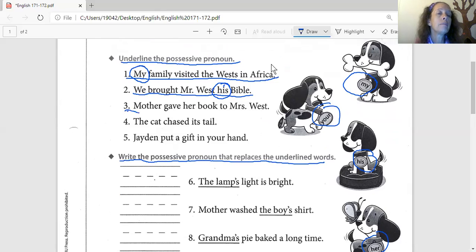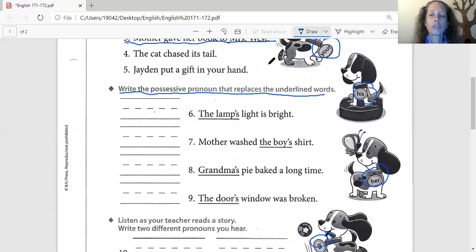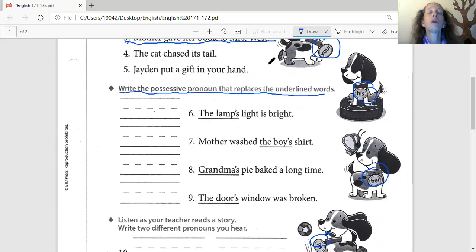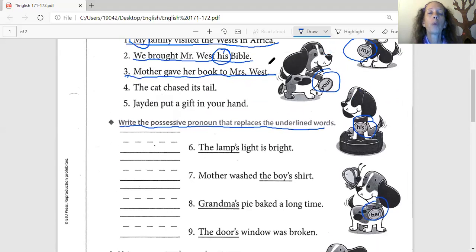Three. Rylan, are you ready? Yes. Mother. Mother. Gave. Her. Her. Book. To. Mrs. West. West. What word is on the dog collars? Can you spell it? KJ, can you help her out? What word is on the dog collar? Of these. Yes. No. There's no it's in this sentence. Her. Her. That's the one. Oh. Her.